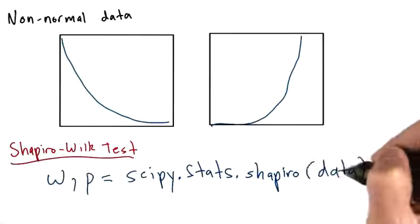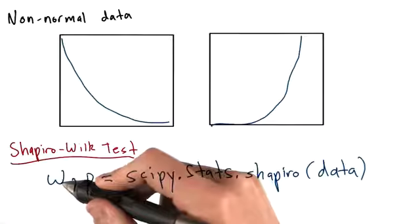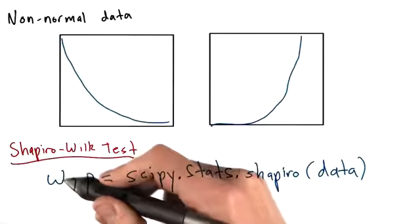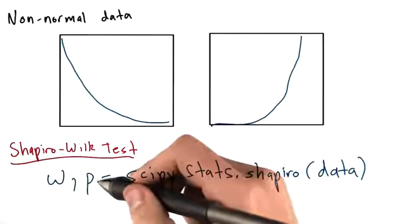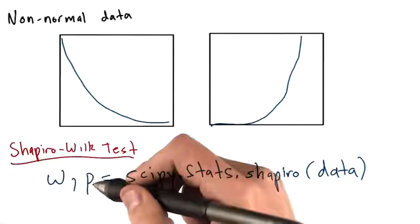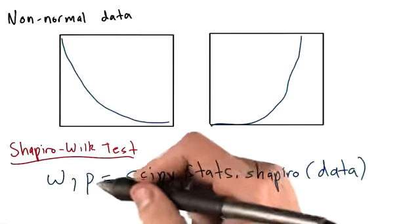This function is going to return these two values. The first, w, is the Shapiro-Wilk test statistic. The second value in this tuple is going to be our p-value, which should be interpreted in the same way that we would interpret the p-value for our t-test.